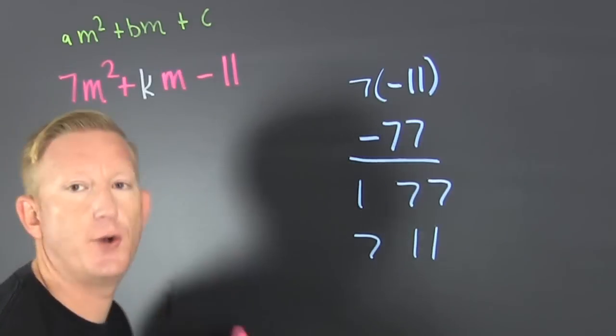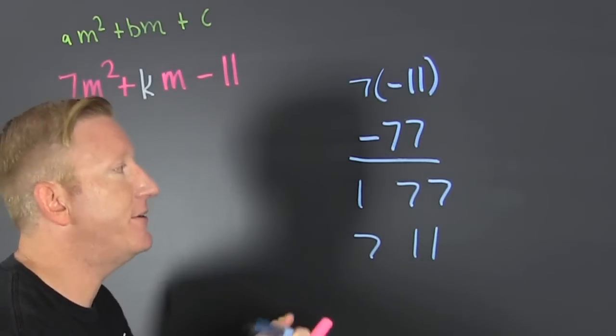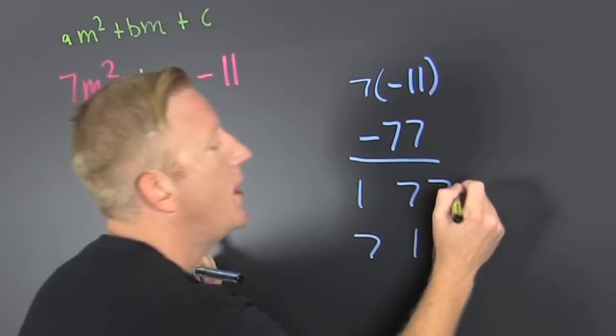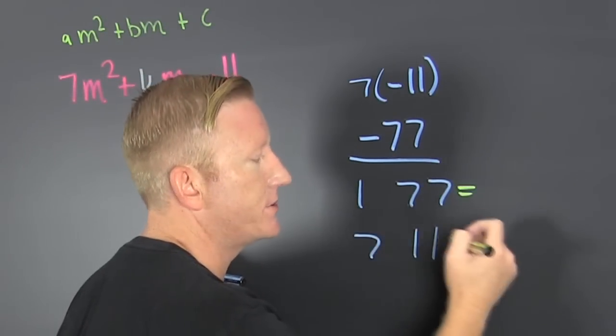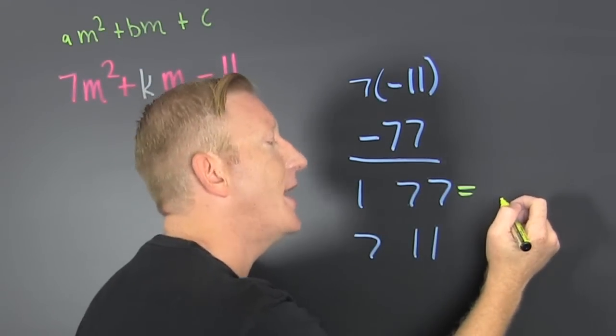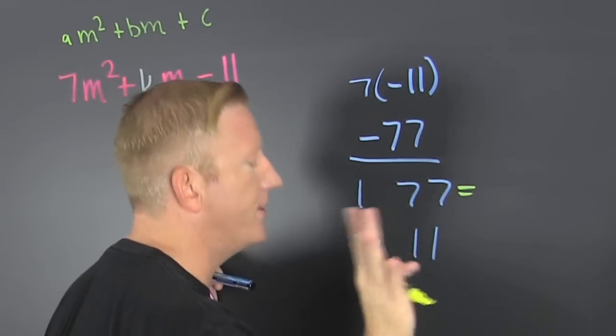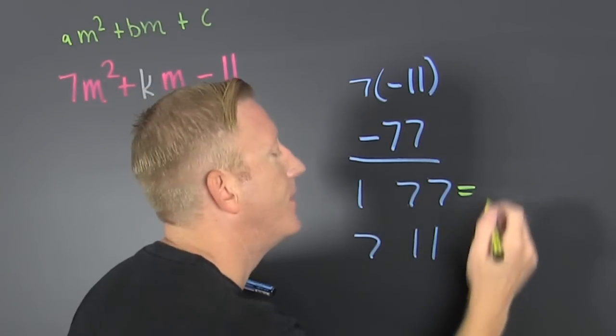And I think I found all of those because 7 and 11 are prime and relatively prime. So I'm looking for the difference between those. I subtract those two.